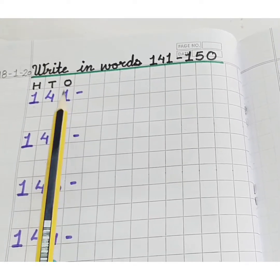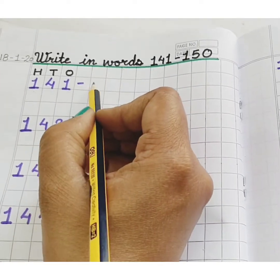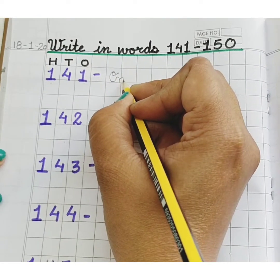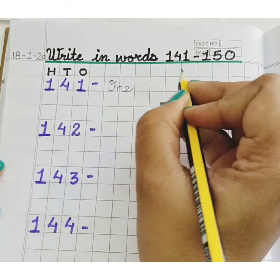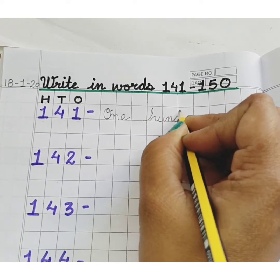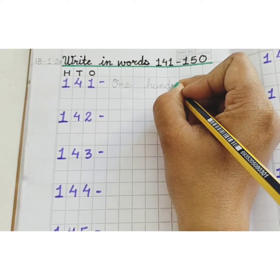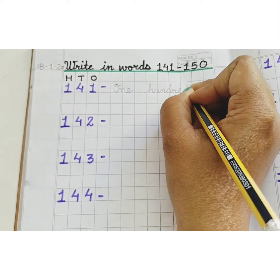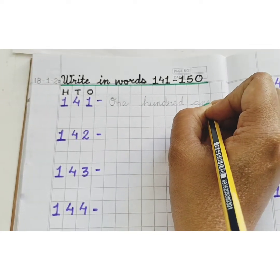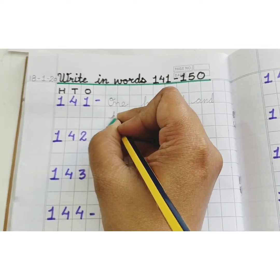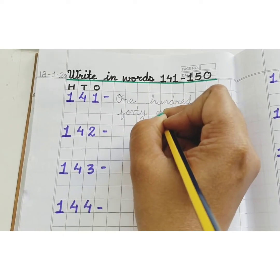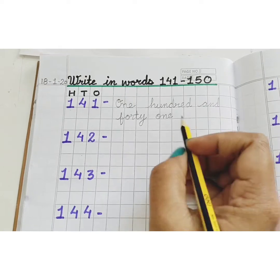141. We will start with capital O, N, E — ONE. H, U, N, D, R, E, D — ONE HUNDRED. AND F, O, R, T, Y — FORTY. O, N, E — ONE. One Hundred and Forty One.